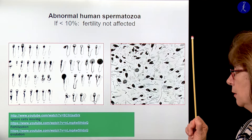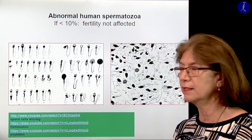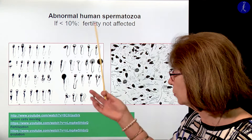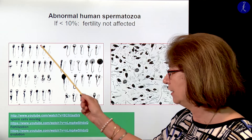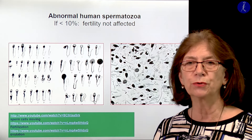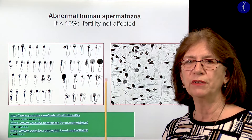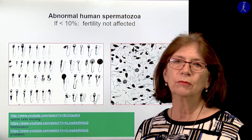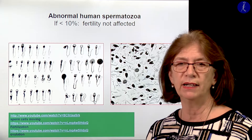If less than 10% of the spermatozoa are abnormal, that doesn't affect fertility if otherwise the number of sperm cells is enough. Abnormal shapes can include: variation in head size, tail length, two heads, or more tails. These abnormal cells generally don't participate in fertilization. The fertilization needs a healthy, good sperm cell. A few hundred sperm cells from the about 50 to 100 million reach the site of fertilization, and the best one will only fertilize the oocyte.